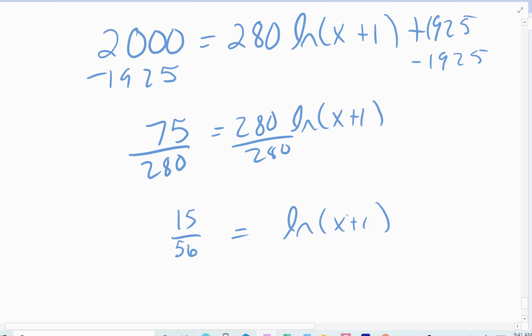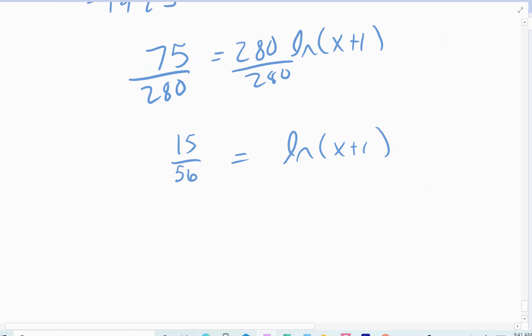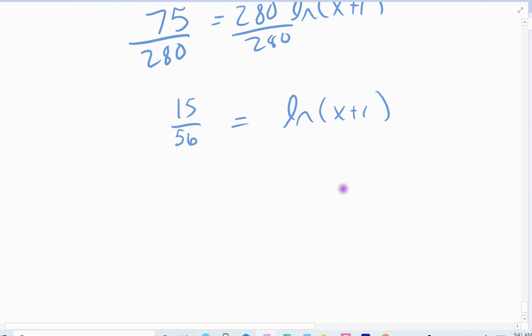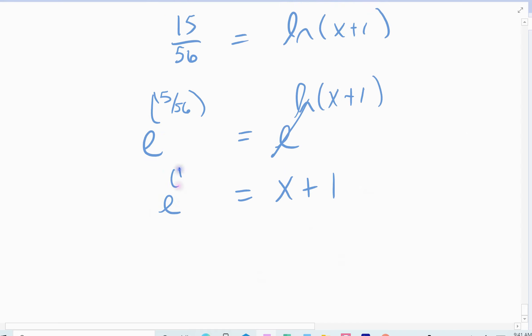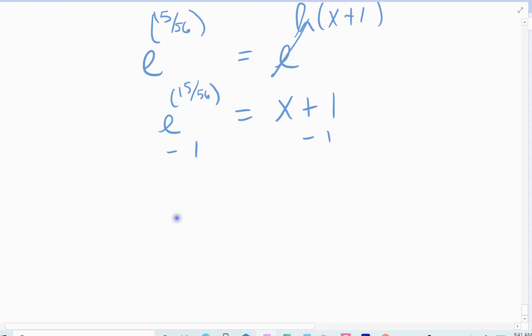Don't round until the very end, right? Because we want exact answers. And so I need to get rid of the natural log. Remember, the natural log is base e. So I'm going to take both sides and raise it to the base e. So I'm going to take e and raise it to the 15 over 56. And I'm going to take e and raise it to the natural log of x plus 1. And again, I did that because I undo those two things. They're inverses. This side's going to leave me with the x plus 1 term. This side's still going to be e raised to the 15 over 56. That's exactly what it is.